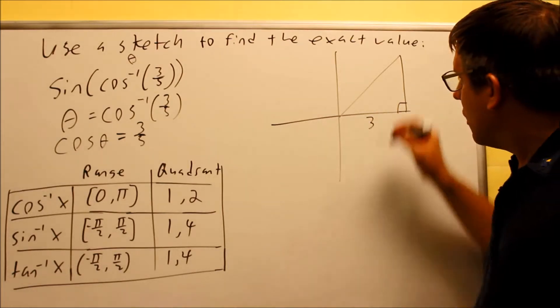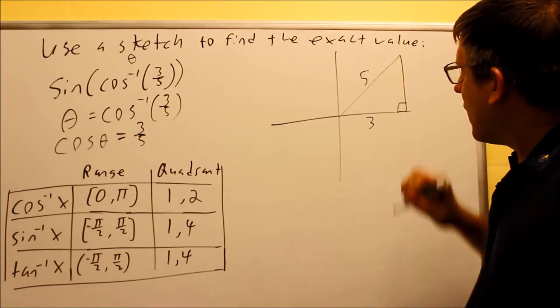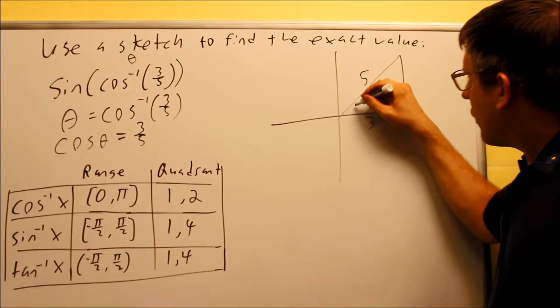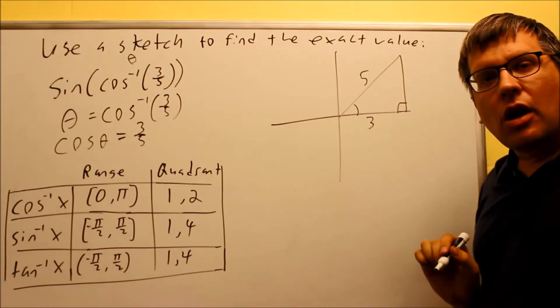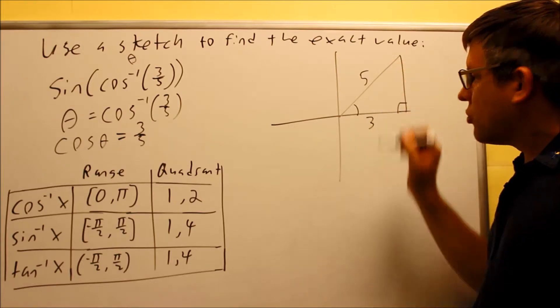So adjacent, this is going to be three here. And then hypotenuse is the side opposite the right angle. The theta, the angle I'm looking at, is actually this one right here. So I got the triangle drawn there.